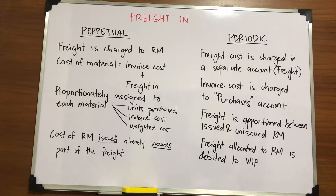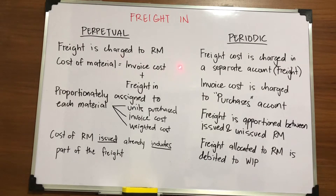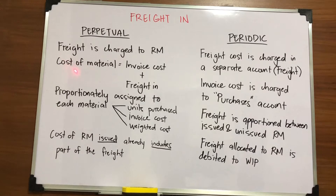There are two recognition criteria in accounting for freight in. For perpetual, the freight is charged to raw materials — it is a capitalizable cost. The total cost of your material is your invoice cost, the purchase price of your inventory, plus the freight in or transportation cost.